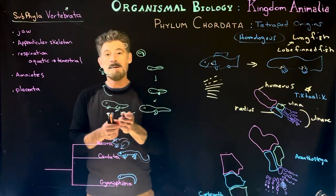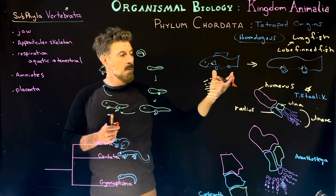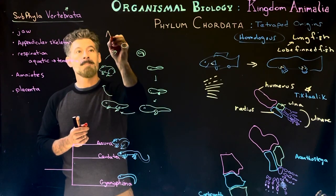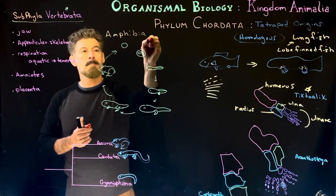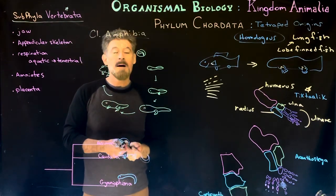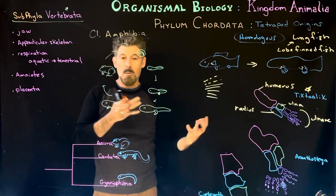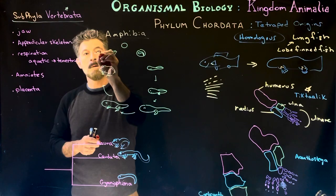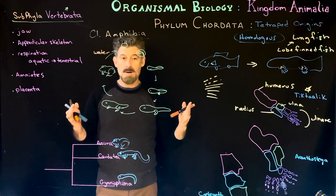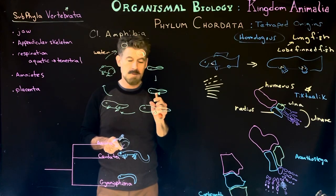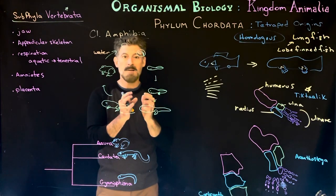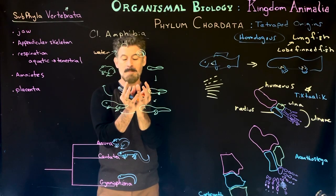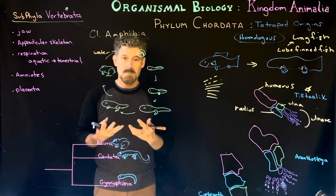Now we'll look at the first major group of organisms today that has well-developed limbs — what these extinct organisms gave rise to — which we call the Amphibia. Amphibia is a class of vertebrate; the name 'amphibious' means water and land, which is displayed in their life cycle. They reproduce in water, though some can reproduce away from large bodies — small frogs might reproduce inside flowers in a rainforest, where leaves collect water and form a miniature aquatic environment. They reproduce within that environment and we have eggs.